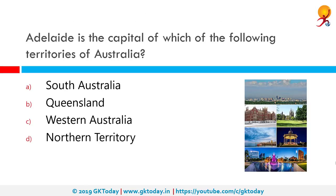Adelaide is the capital of which territory of Australia? The correct answer is South Australia. Adelaide is South Australia's cosmopolitan coastal capital and one of the most popular cities. The city's Adelaide Festival is an annual international arts gathering with spin-offs including fringe and film events.